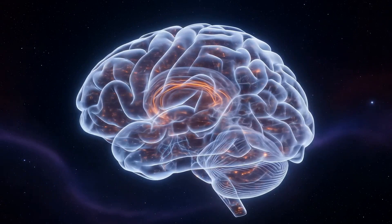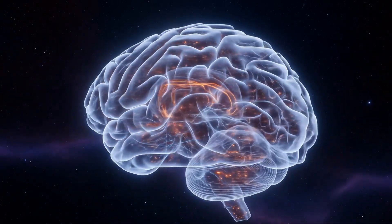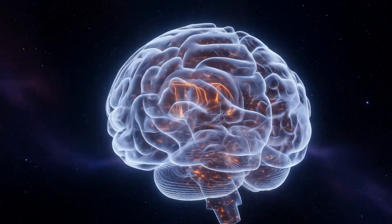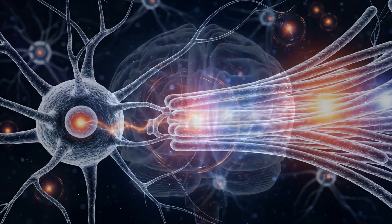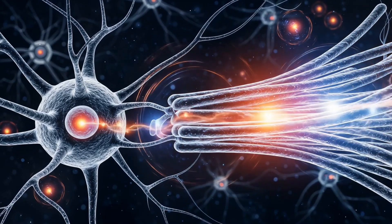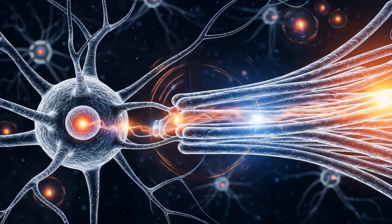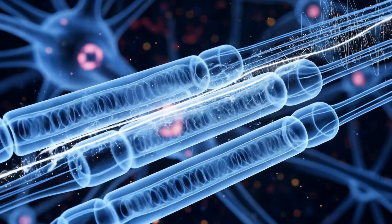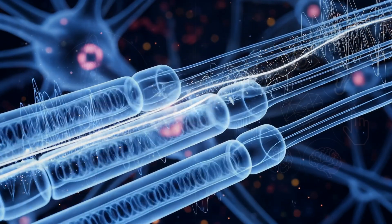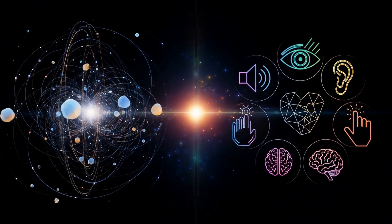Your brain mirrors this process. Within your neurons, microtubules act as biological qubits, resonating with the same frequencies that shape space-time. They perform a quantum Fourier transform, converting spinning light vectors into coherent perceptions.